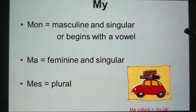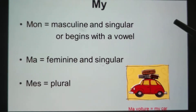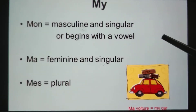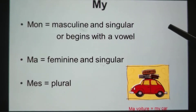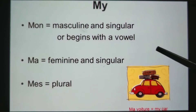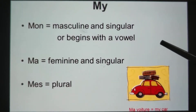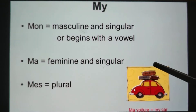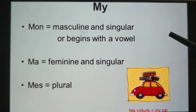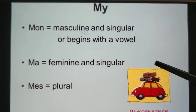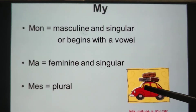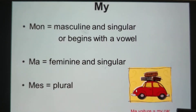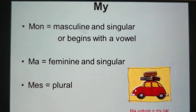For 'my' in English, we have three forms in French: mon, ma, mes. Mon is used with masculine singular nouns, or singular nouns starting with a vowel. Ma is used with feminine singular nouns. Mes is used with plural nouns, whether masculine or feminine. For example, 'ma voiture' — my car — voiture is feminine, so we use ma.